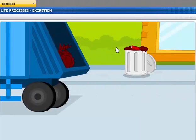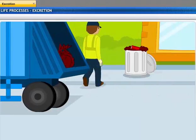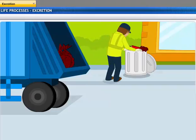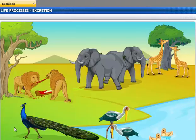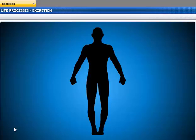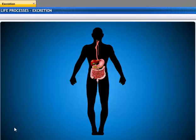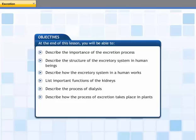All cities have a garbage disposal system in place to maintain clean and hygienic living conditions. Similarly, all living organisms use some kind of mechanism to eject wastes from their bodies. In this lesson, we will take a closer look at the waste disposal strategies used by various organisms — this lesson is about the process of excretion in different types of organisms.